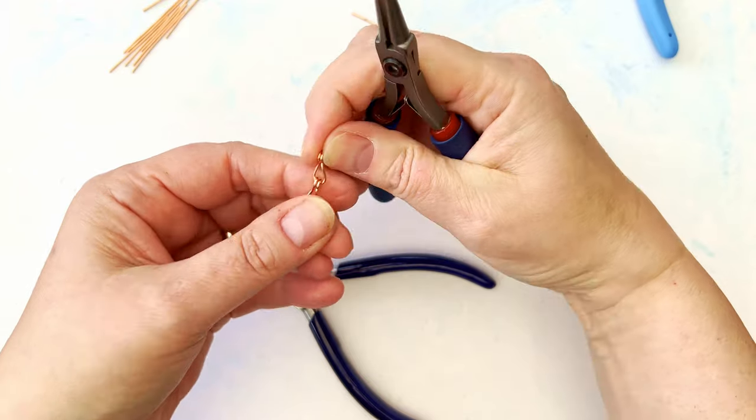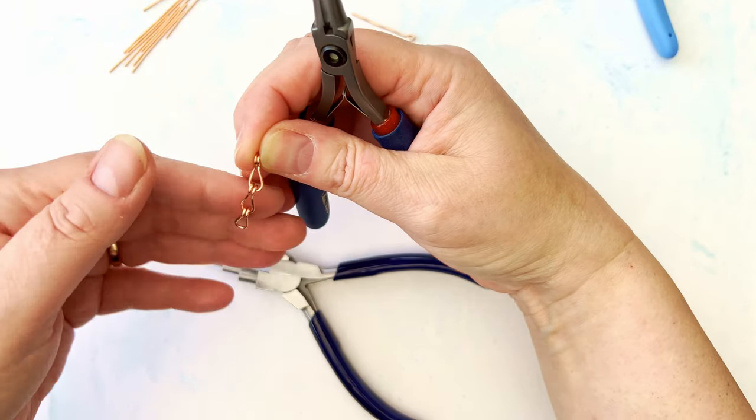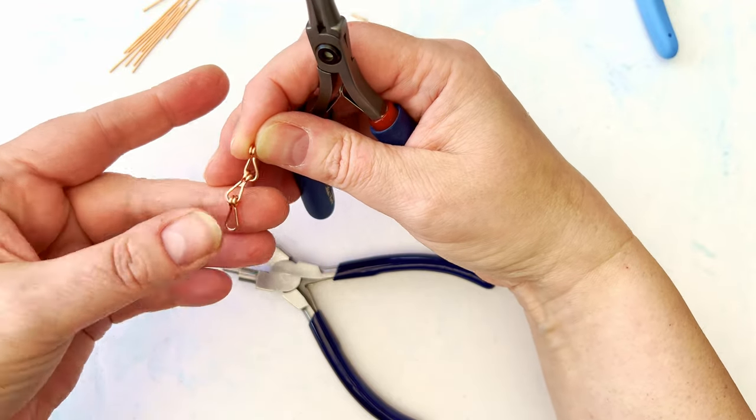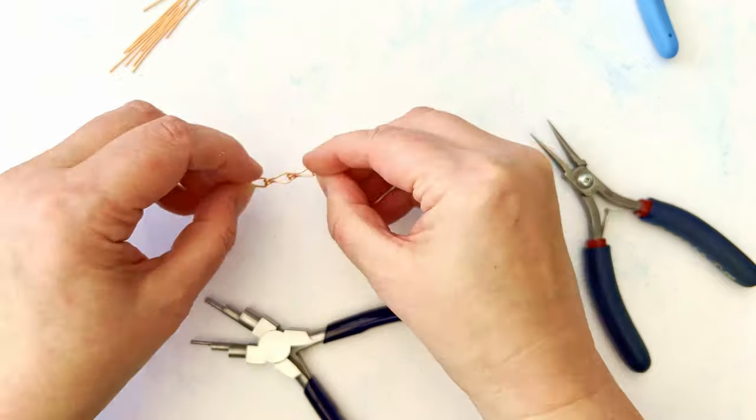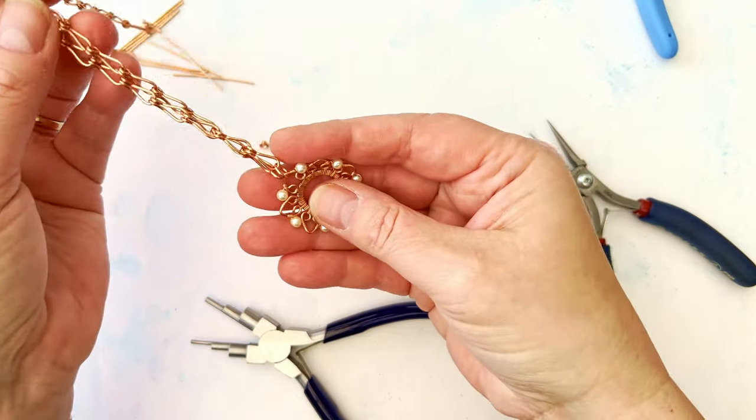But essentially you could use that as a little teardrop base for an earring, couldn't you? You could pop a jump ring in the top and a bead maybe off the bottom of it. I mean, how sweet is that? Really sturdy and, like I said, great for pendants like so.